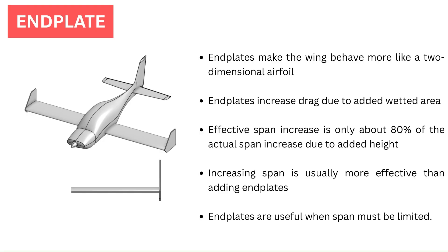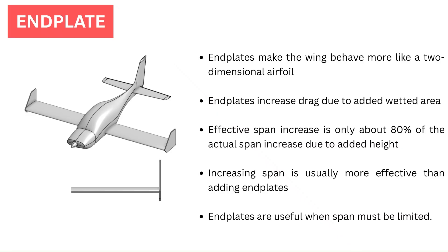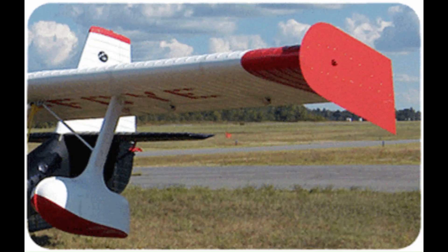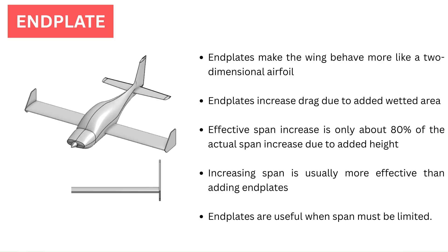Endplate: it was recognized early on that drag did not just depend on the geometry of the body, but also increased rapidly with angle of attack. The endplate has a similar effect as placing a wing section from wall to wall in a wind tunnel, making it behave more like a two-dimensional airfoil. The endplate effect has been known since the dawn of flight, but is rarely seen. The wetted area of the endplate itself creates drag, and an endplate wing has an effective span increase of only about 80% of the actual span increase caused by adding the endplate's height to the wingspan. In most cases, you get a better airplane by increasing the span, but endplates can be useful when span must be limited.